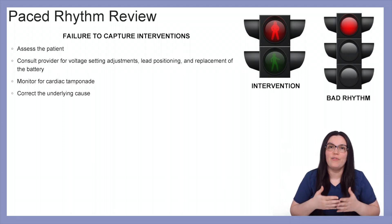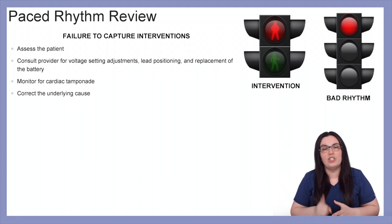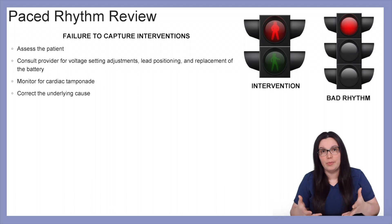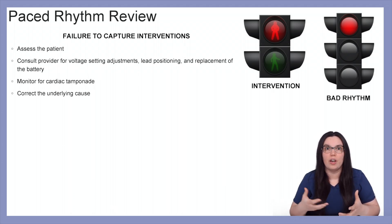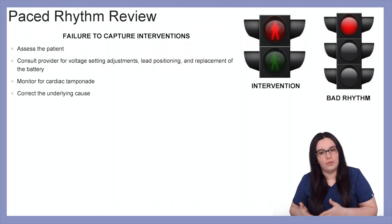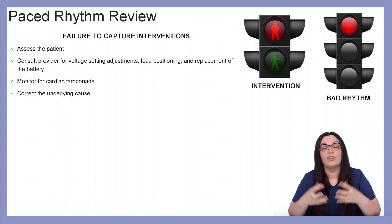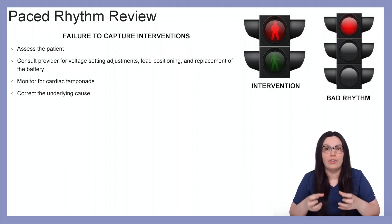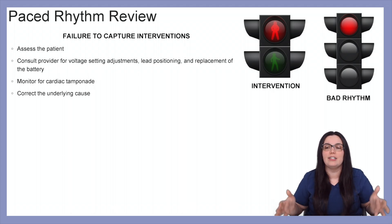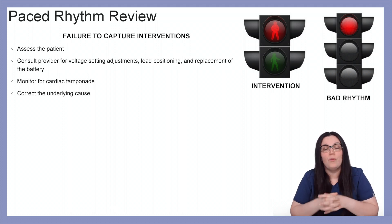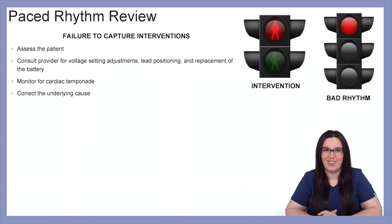For interventions with failure to capture, the number one thing is to assess our patient and ensure they are hemodynamically stable. We want to consult the provider for voltage setting adjustments, lead positioning, and a replacement battery if that is the problem. We also want to monitor for cardiac tamponade — if we have a perforation inside the cardiac muscle, bleeding will progress and start compressing the heart, making it very hard for the heart to beat on its own. We also want to treat and correct the underlying causes.